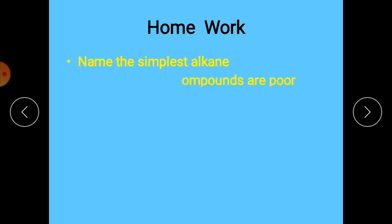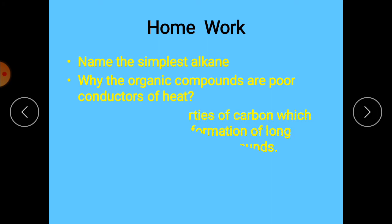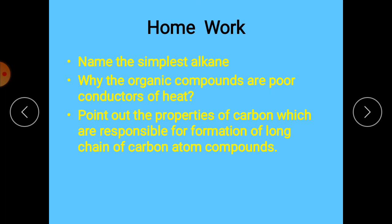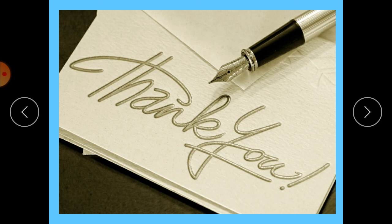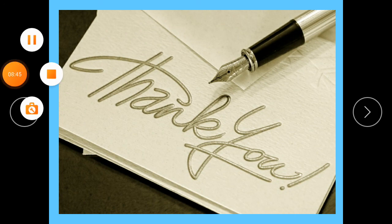For homework: name the simplest alkane, explain why organic compounds are poor conductors of heat, and point out the properties of carbon which are responsible for the formation of long chains of carbon atom compounds. Hope you understand this lecture. If you have any question, you can ask. Solve this homework in your copies. Take very care of yourselves.